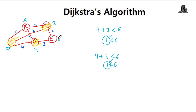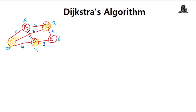We are now left with two vertices B and E, both having distance 6. We can choose either; let's select B. The adjacent vertices of B are C and D, and both are already visited, so no updates are made. B is marked visited. Finally, we check E: its adjacent vertices are D and A, and both are already visited, so no updates are made.